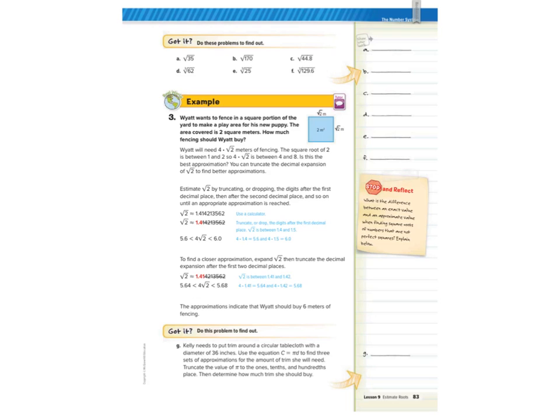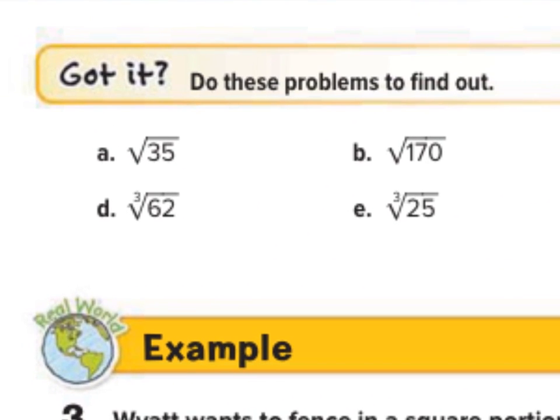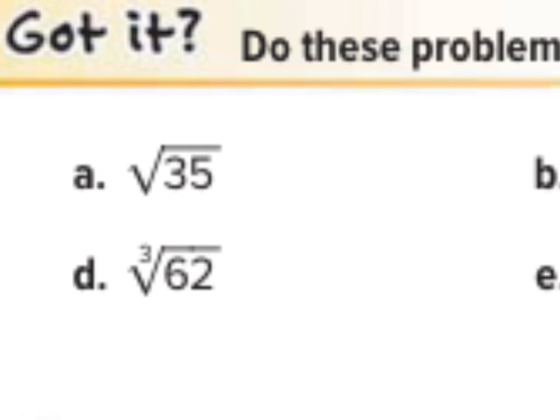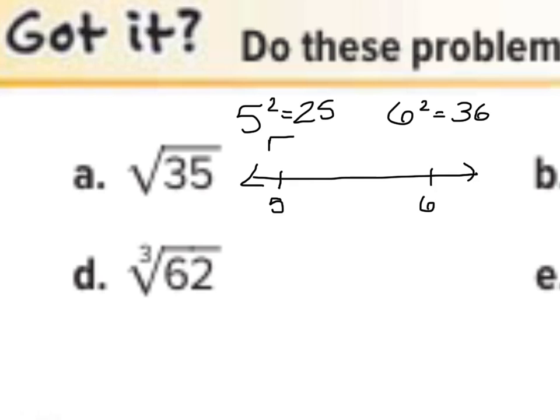Now we have a slew of problems to try on our own, so let's go and try them. When we look at a, the square root of 35, well think, what perfect squares are around 35? Well, I know that 5 squared equals 25, and we know that 6 squared equals 36. So if we're looking at a number line, we have 5 and we have 6, and 5 is the square root of 25 and 6 is the square root of 36. And so where does the square root of 35 fall in? Well, I would think somewhere right around here. And so if we're looking for the closest whole number estimate or closest integer estimate, that's going to be simply 6.